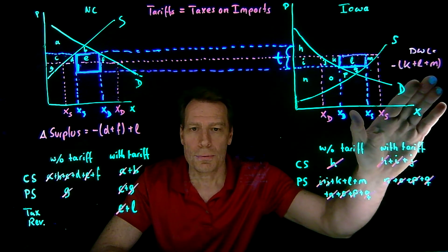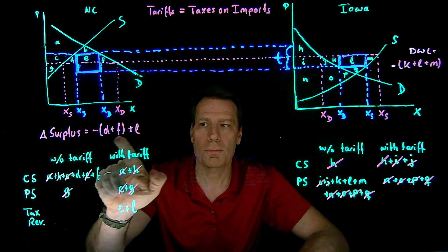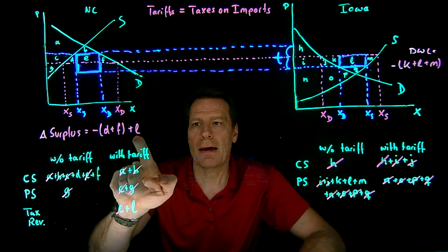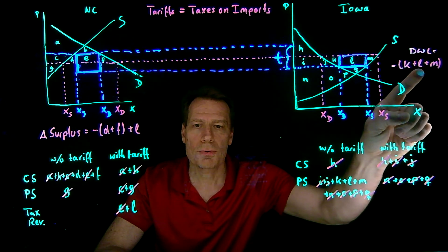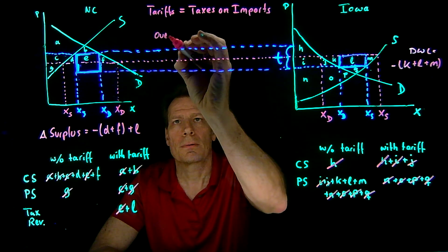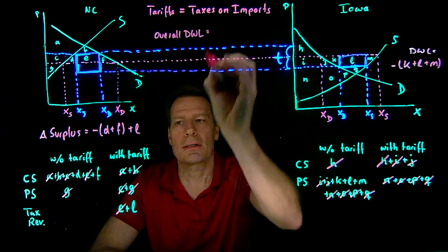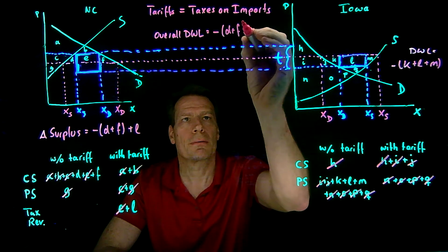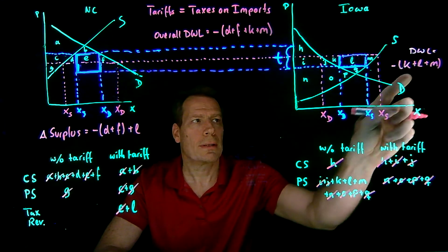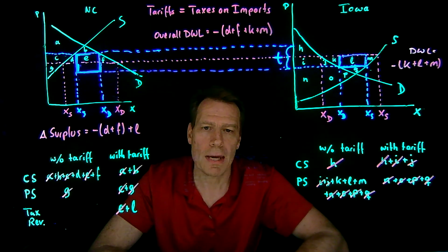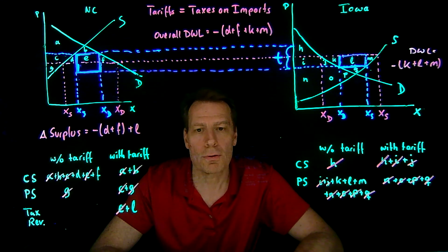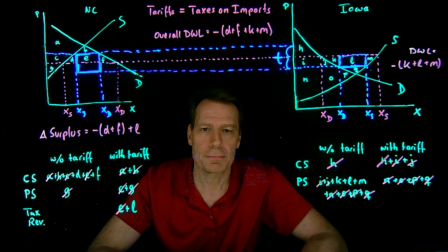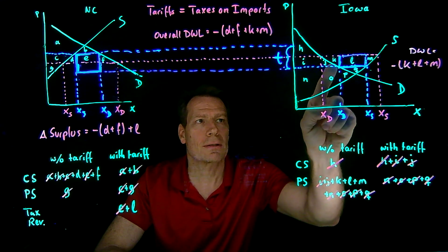North Carolina might gain or lose depending on which of these is bigger. But we can also ask, the two regions together, are they losing or gaining? Well, we have a plus L here and we have a minus L here. So those are going to cancel. And the overall deadweight loss across the two regions is then the minus D and F here, and the minus K and M here. The L is a negative here and it's a positive here, so those would cancel when we add them up. So while North Carolina might benefit from having the tariff in terms of overall surplus, overall the regions are losing. There's a deadweight loss across the two states. And that deadweight loss is the triangles D, F, and the triangles K and M.